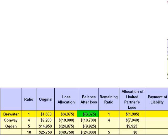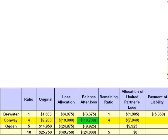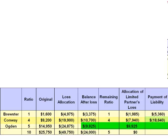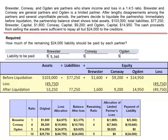Brewster's capital account had been a deficit of $3,375, and the additional loss of $1,985 gives Brewster a deficit balance of $5,360. Conway had a deficit balance of $10,700 and absorbed an additional $7,940, giving Conway a deficit balance of $18,640. Ogden's capital account has been brought up to zero, and the total capital is a deficit of $24,000. Brewster will be expected to pay $5,360 and Conway $18,640 to satisfy the remaining liabilities. Ogden has no responsibility toward that $24,000 debt.